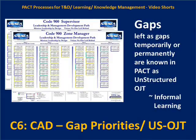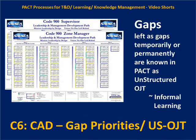Gaps — those events that have either a partial red circle or nothing in the circle — need to be prioritized. If the project steering team doesn't prioritize them for development and acquisition, they remain as unstructured on-the-job training, what today is known as informal learning. We might be able to identify where in the learning path one needs to learn something.